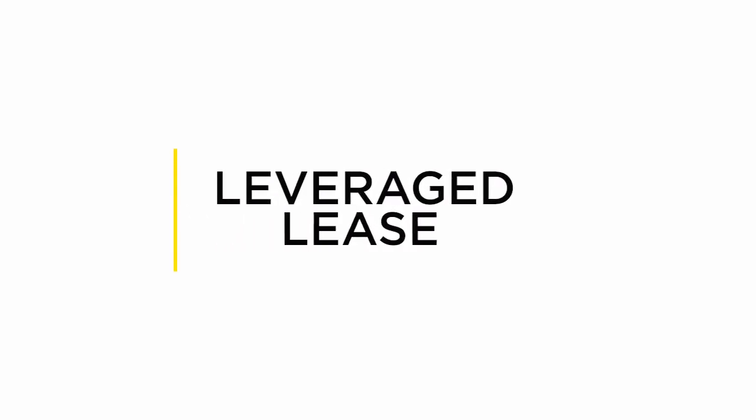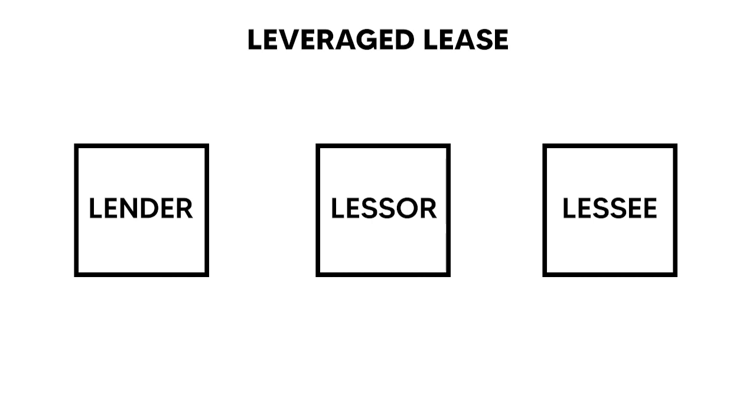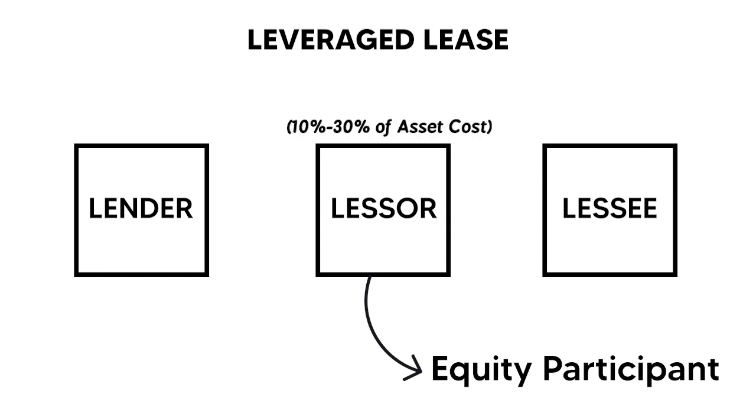An operating lease is the true form of leasing, whereas a finance lease is actually a lending arrangement disguised as a lease. An operating lease lasts for a relatively shorter period, whereas a finance lease lasts for almost the entire economic life of the asset. In an operating lease, the lessor incurs the maintenance and repair cost and can claim depreciation, whereas in a finance lease, the lessor does not incur maintenance costs and is not allowed to claim depreciation. A leveraged lease is a type of finance lease with three parties — the lessor, the lessee, and the lender. The lessor, also known as the equity participant, invests only 10–30% of the asset cost, whereas the remaining 70–90% is held by the lender.